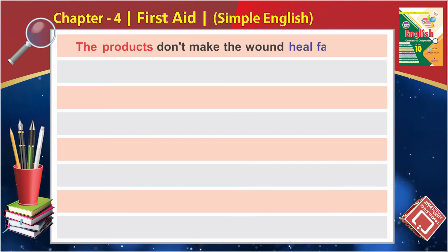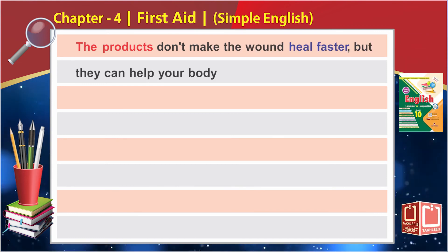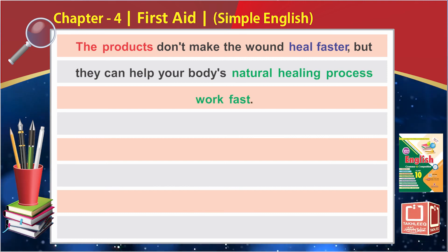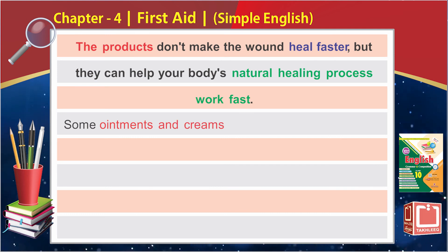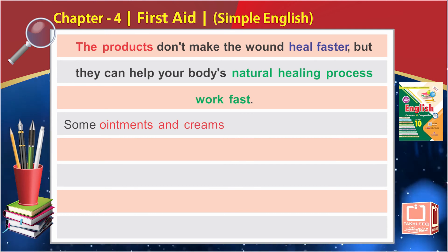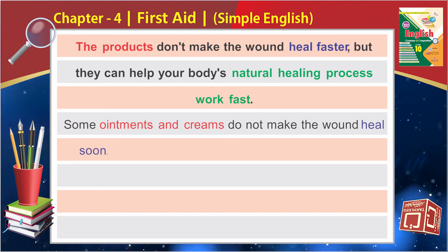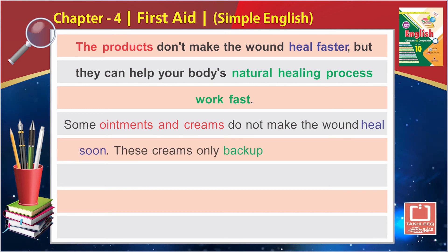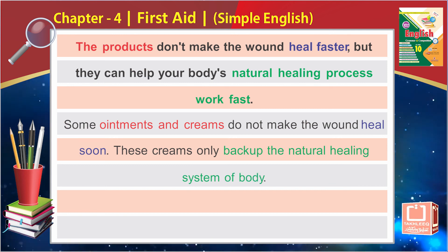Next line: 'The products don't make the wound heal faster, but they can help your body's natural healing process work fast.' Simple English: 'products' se murad thi ointments aur cream. Some ointments and creams do not make the wound heal soon. These creams only back up the natural healing system of the body.